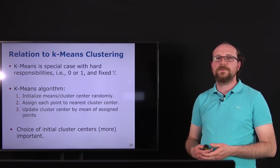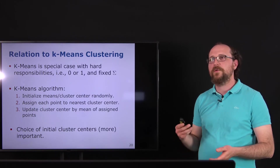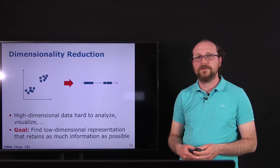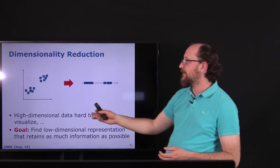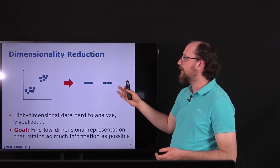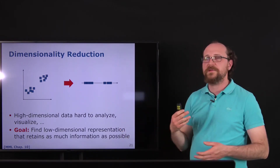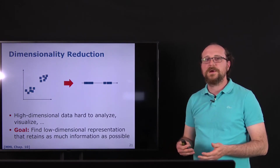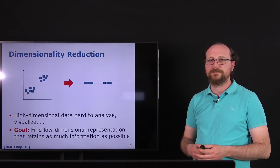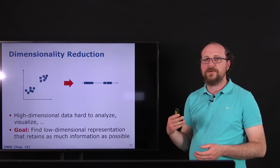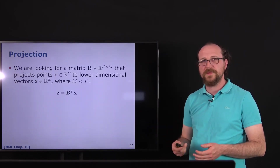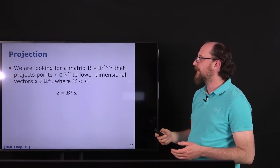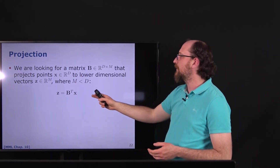Another thing we want to do with data is extract a lower-dimensional representation to gain insights — this is dimensionality reduction. We have higher-dimensional data and want to project it to a lower-dimensional representation that retains as much information as possible. We look for a projection matrix B of dimension d rows and m columns that projects a point from d-dimensional space to a lower-dimensional space m, so z = B^T · x.